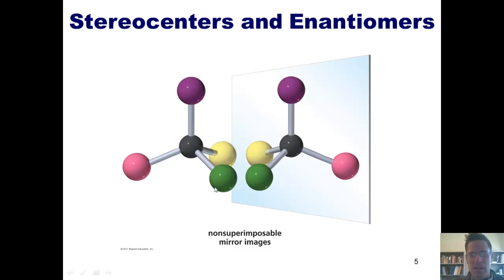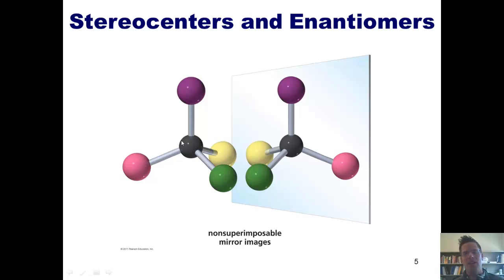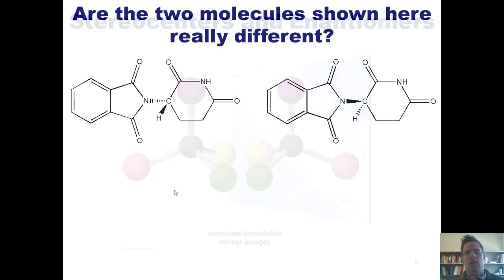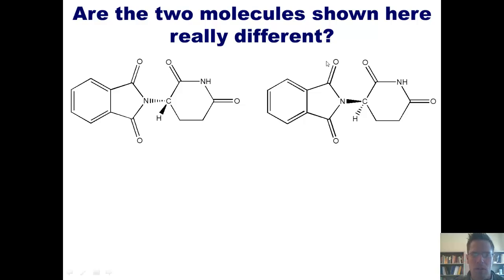Once again, you can imagine three-dimensionally a molecule like the one shown on the left staring at its mirror image counterpart shown to the right. If you take the one on the right and flip it over upside down and try to line up all of the colored balls onto the molecule on the left, you'd see that there's no way to get each of those colors pointing in the exact same three-dimensional direction. So look at these two molecules here — are they really different, or are they the same?